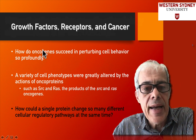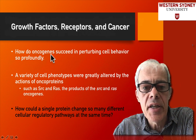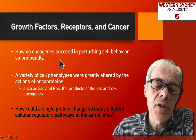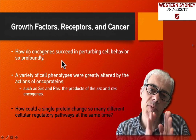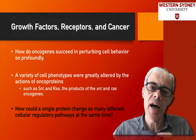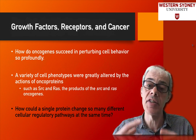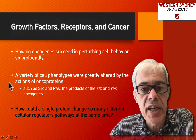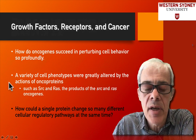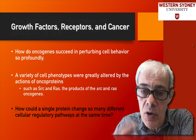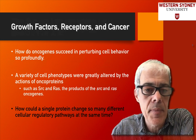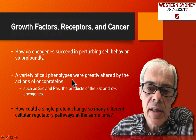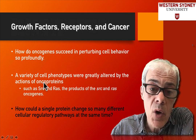We're looking now at the question of how do oncogenes succeed in perturbing cell behavior — how can such a small change in a gene sequence lead to such a large phenotypic change in cell growth? Clearly, no protein in the cell works in isolation. To understand how a cell protein works, you've got to look at a pathway. People have identified a variety of cell phenotypes that become altered by these oncoproteins.